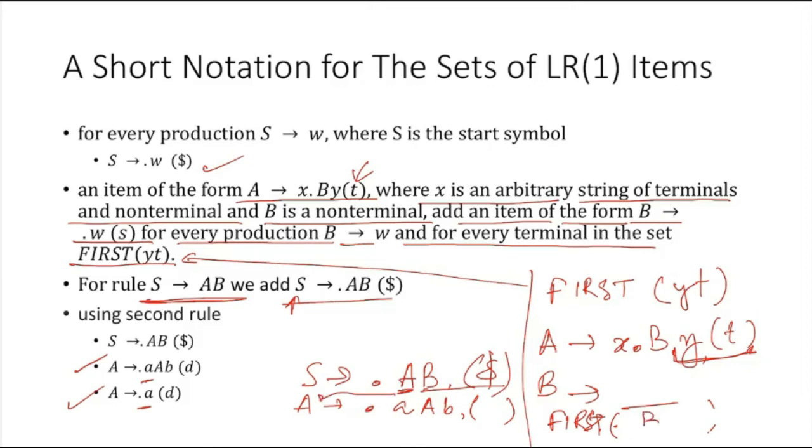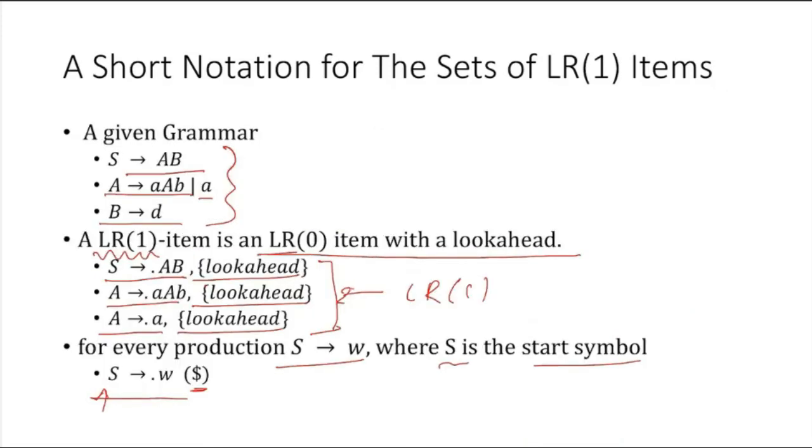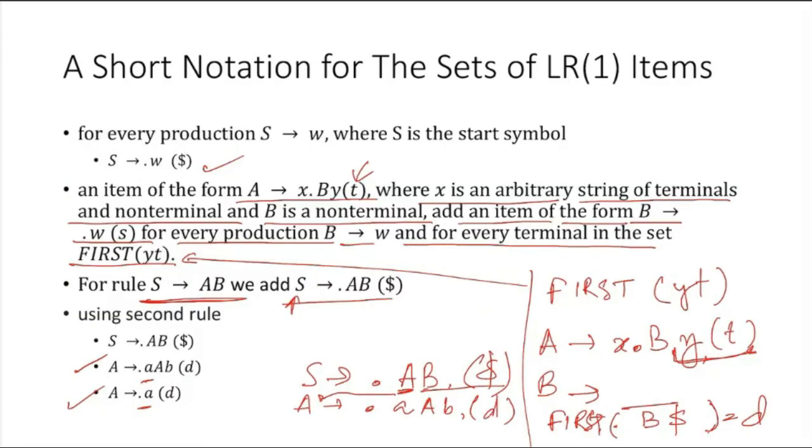B is there and lookahead dollar is there. So we have to see what is FIRST of B. So here, this rule is not there in the previous slide, but you can see FIRST of B will be this d. So we have to add d here. This is the reason d is added here. And again, there is another production rule, that is A → ·a. That is also you have to add. What we have to add here in the lookahead is d, because the same thing will go with this also - FIRST of B dollar.